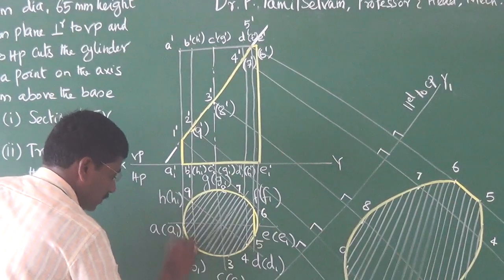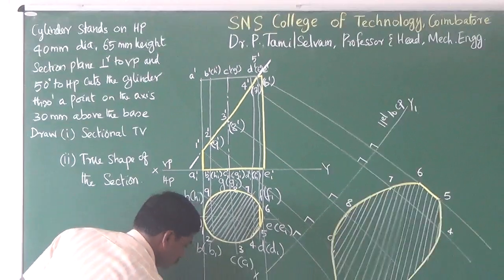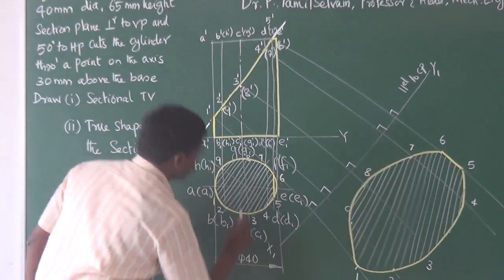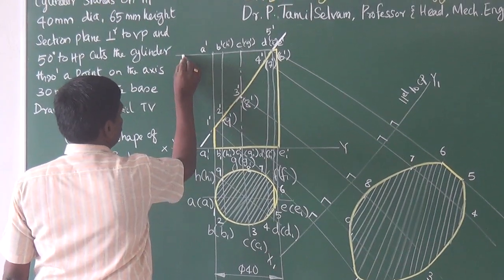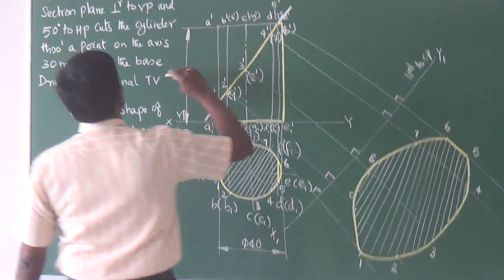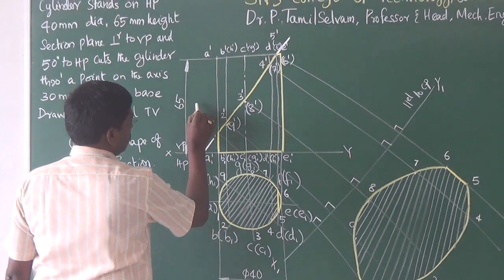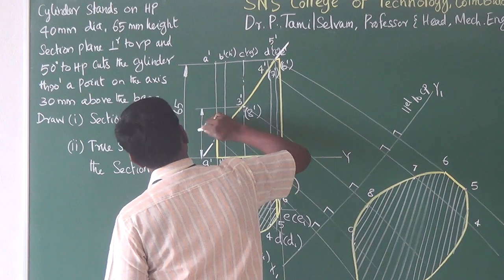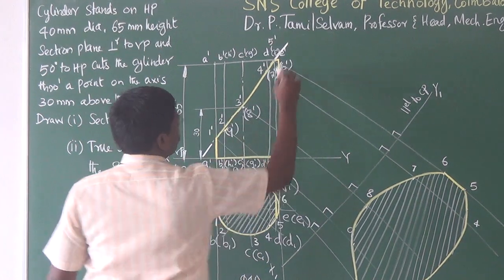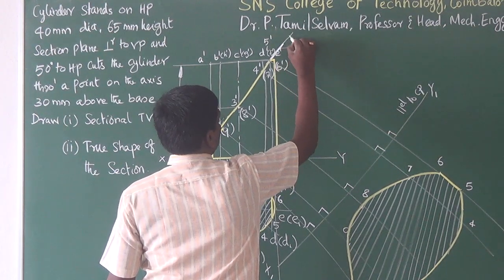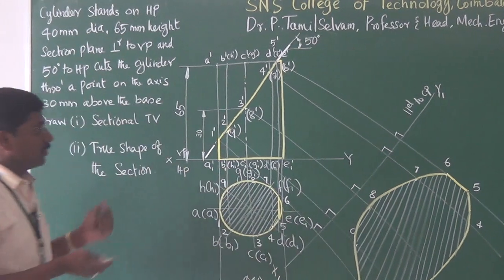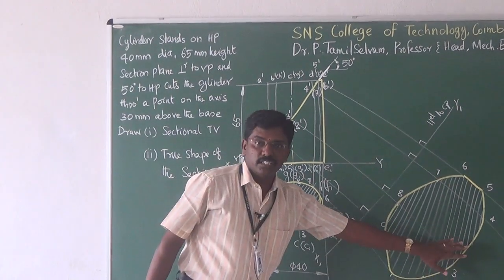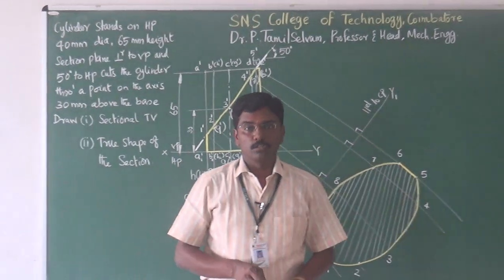We draw the dimensions: diameter of 40 mm, height of 65 mm, the sectioning height of 30 mm, and the angle of 50 degrees. This completes the problem of a cylinder cut by a section plane at 50 degrees to HP, where we have drawn the sectional top view and the true shape of the section. In the next session, we will see a problem of a cone. Thank you.